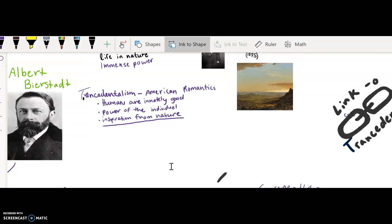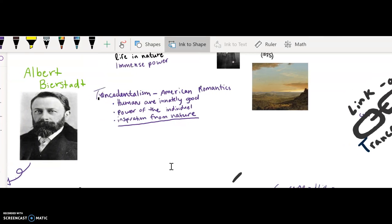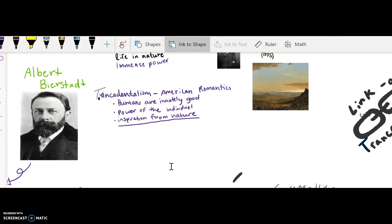So this connects with Transcendentalism and American Romantics that humans are innately good and that individuals themselves have power, and it's not just connected to that. And obviously, inspiration from nature because all of these paintings are of nature.